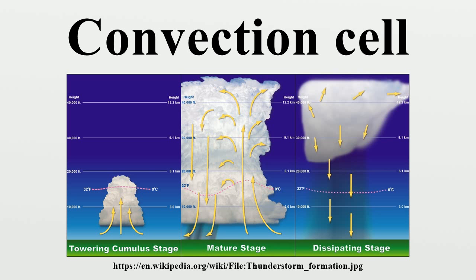All thunderstorms, regardless of type, go through three stages: a developing stage, a mature stage, and a dissipating stage. The average thunderstorm has a 24 km diameter. Depending on the conditions present in the atmosphere, these three stages take an average of 30 minutes to go through. Adiabatic processes — heating caused by the compression of descending air — is responsible for such winter phenomena as the Chinook or the Fohn.